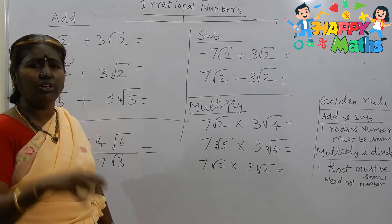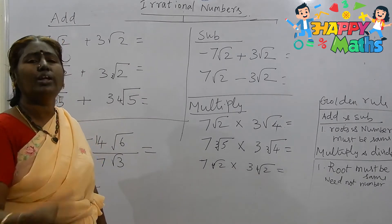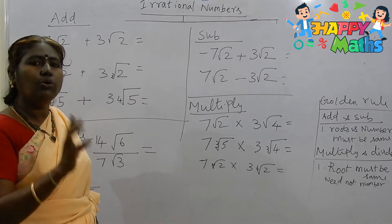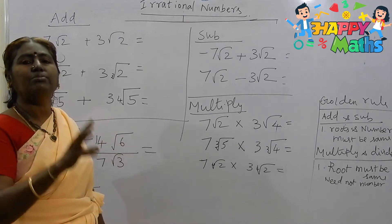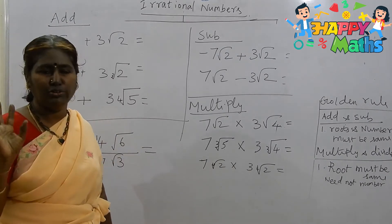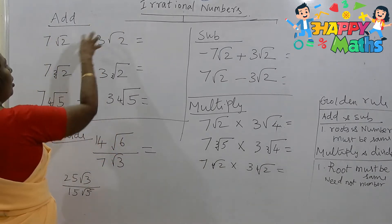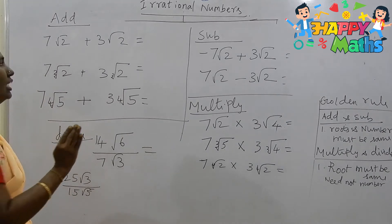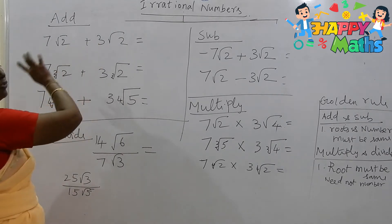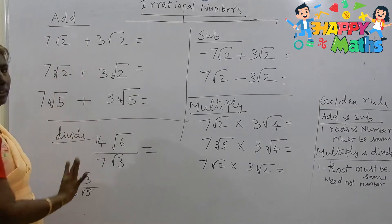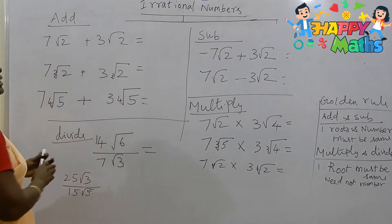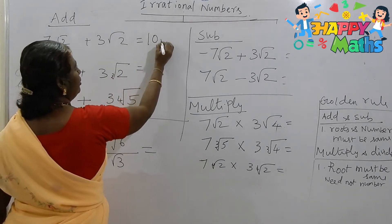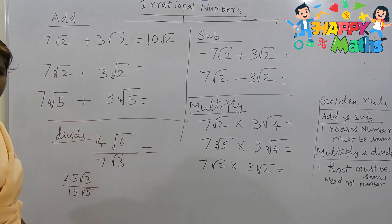If this is any donkey or monkey, or whatever animal you like so much, you keep it like that. We are going to add only the number before it — how many times it comes. We are not going to deal with this root 2, or cube root 2, or 4th root 5 — anything. Only the number which comes before that. So this is 3 donkeys here and 7 donkeys here. All together, how many donkeys? 10 donkeys. So I write 10 donkeys — that is nothing but 10 root 2. So simple.